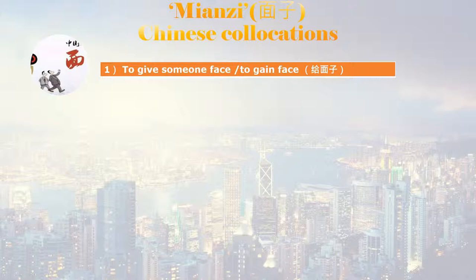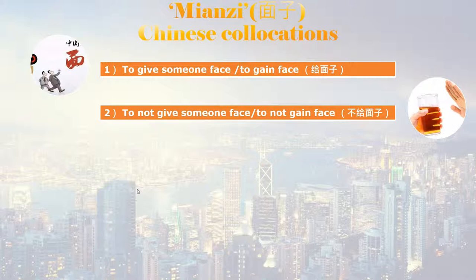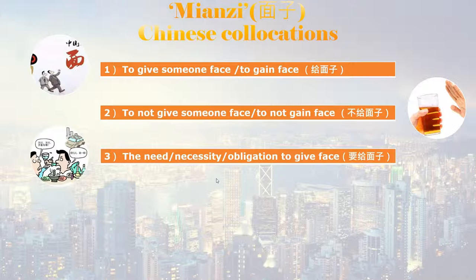Number one: 给面子, or 北面 in Cantonese. This translates to 'give someone face' or 'to gain face' in English. For example, if you're with someone who's your senior at work, you should give face and show respect to them. Number two: 不给面子, which means 'to not give someone face.' So if you refuse a drink from your Chinese client without a good reason, you fail to give face. Number three: 要给面子, which means the need, necessity, or obligation to give or provide face to someone else.